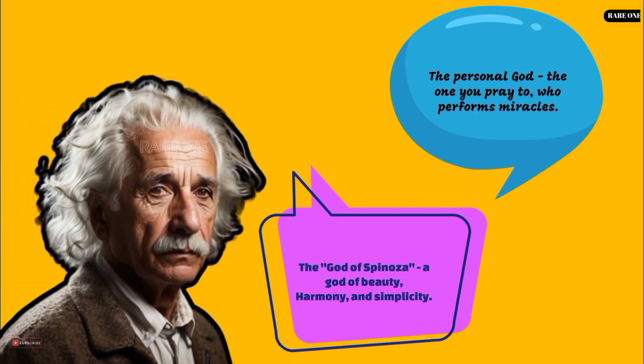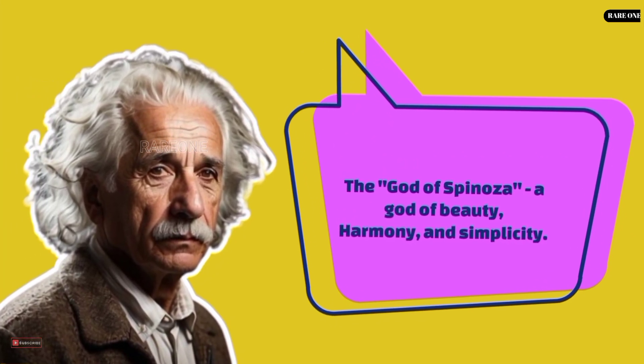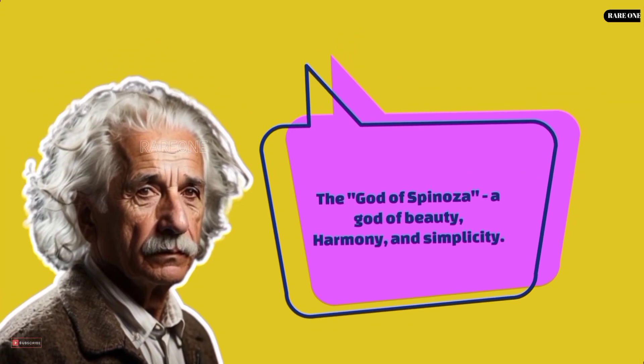But here's where it gets interesting. Kaku talks about two types of gods that Einstein believed in. One, the personal God, the one you pray to who performs miracles. Two, the God of Spinoza, a God of beauty, harmony, and simplicity.